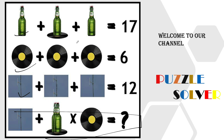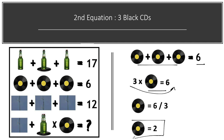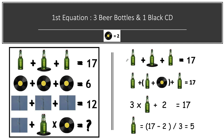We are skipping the first equation because it has two items — a beer bottle and a CD — and we cannot solve it to find individual values. Moving to the second equation: three black CDs equal six. Solving for one CD: six divided by three gives us a CD value of two.